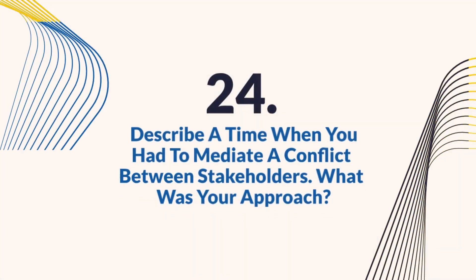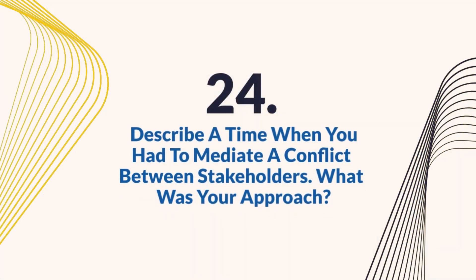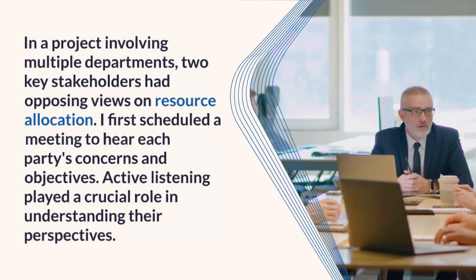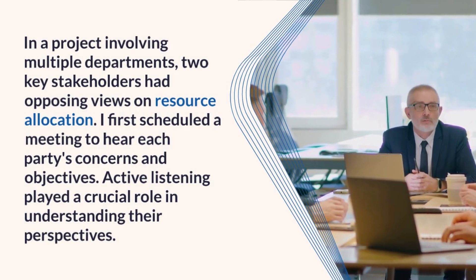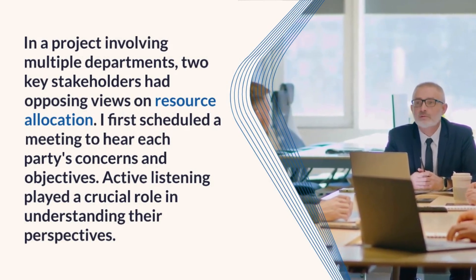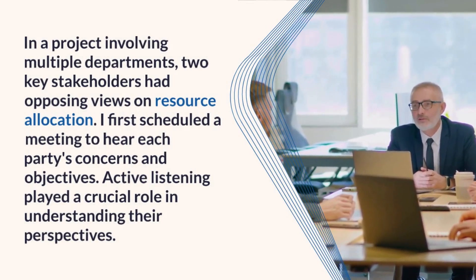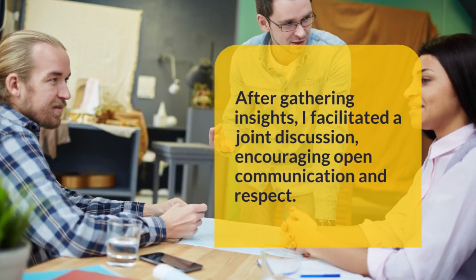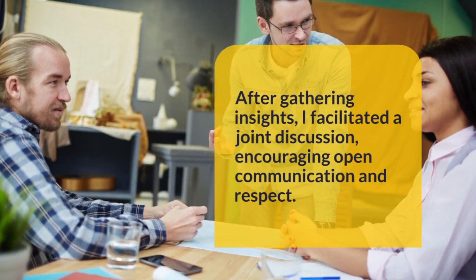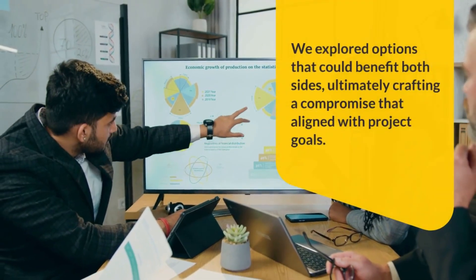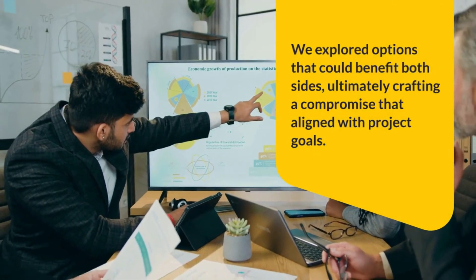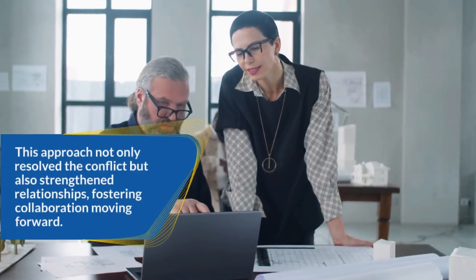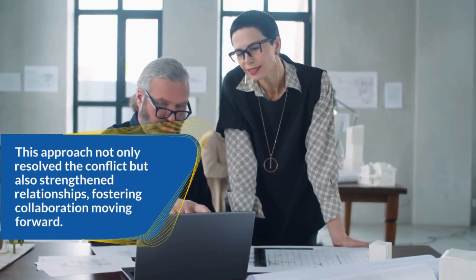Question 24: Describe a time when you had to mediate a conflict between stakeholders. What was your approach? In a project involving multiple departments, two key stakeholders had opposing views on resource allocation. I first scheduled a meeting to hear each party's concerns and objectives. Active listening played a crucial role in understanding their perspectives. After gathering insights, I facilitated a joint discussion, encouraging open communication and respect. We explored options that could benefit both sides, ultimately crafting a compromise that aligned with project goals. This approach not only resolved the conflict but also strengthened relationships, fostering collaboration moving forward.